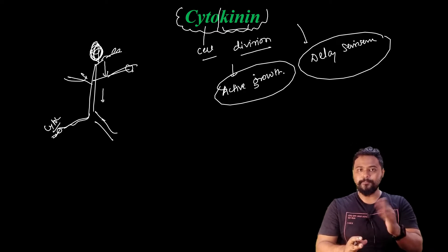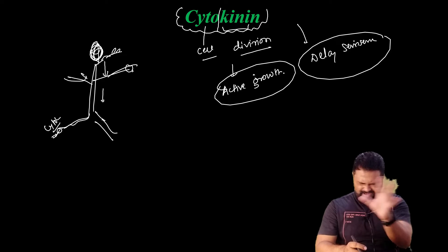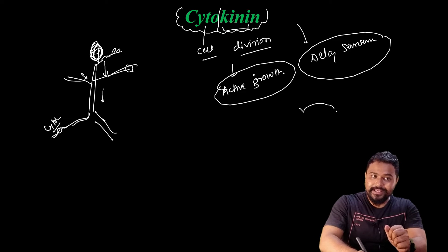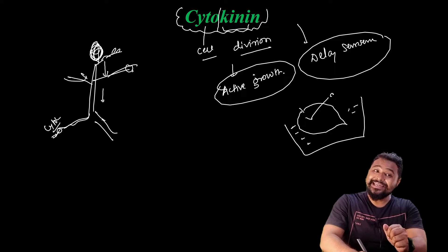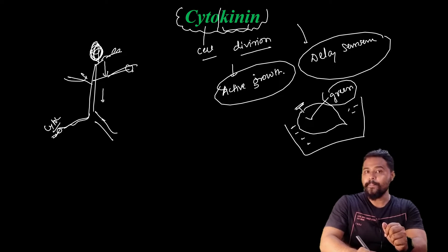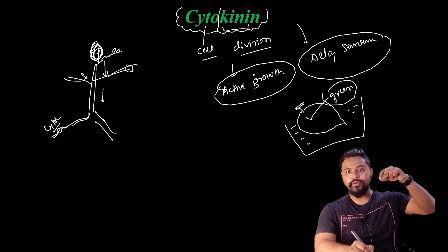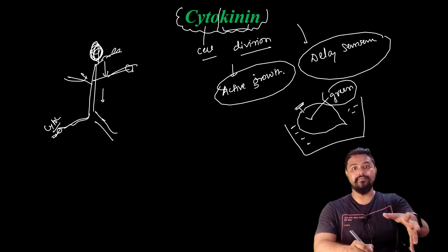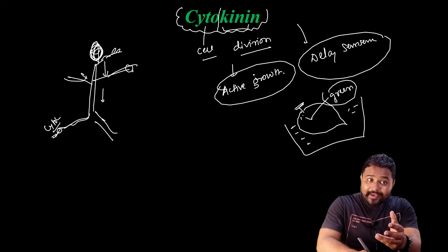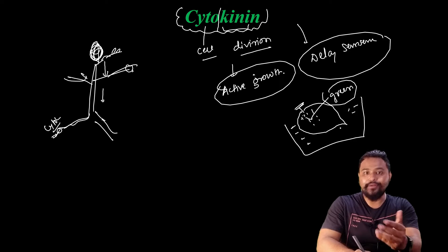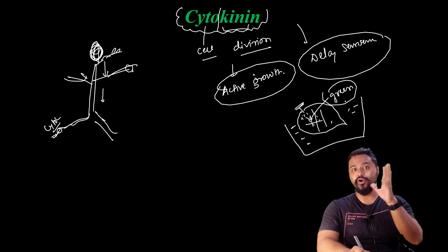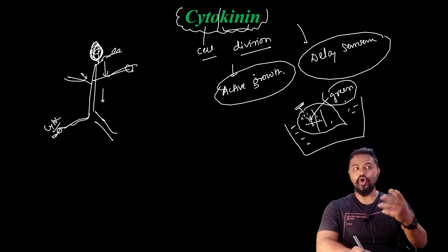To demonstrate this, I will use the leaf. The Richmond-Lang effect: if you apply the cytokinin hormone to a leaf, the leaf will stay green and live for many more days. This is the effect of keeping the leaf green. So cytokinin is the cell division hormone, maintaining leaf greenness.